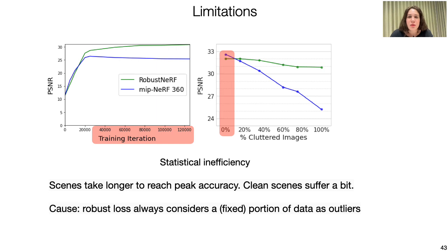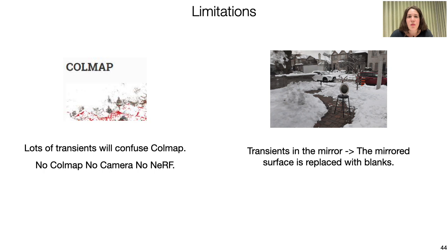The other two limitations are Colmap and mirrored surfaces. Colmap is a known failure point for many NERF models. Since we rely on Colmap for camera characterization, its failure due to crowded scenes will hinder training our NERF models as well.